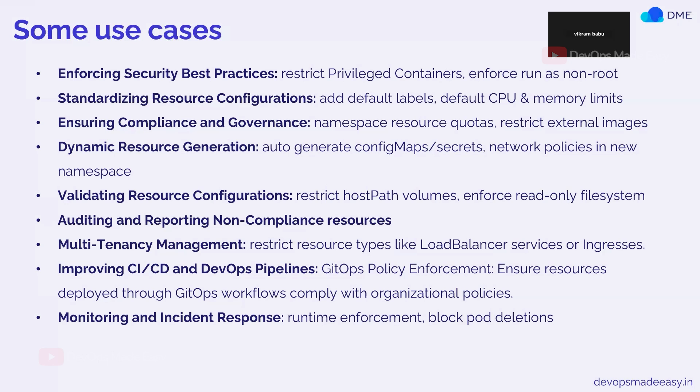I can write a Kyverno policy that blocks all pod creation requests using external images or external repositories. For dynamic resource generation, I can dynamically generate ConfigMaps, Secrets, or network policies — for example, whenever someone creates a new namespace, I can automatically create image pull secrets or network policies in that namespace as soon as it gets created. These fall under generate policies. I can also validate resource configurations — for example, blocking pods that use hostPath volumes or that don't use a read-only file system.